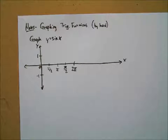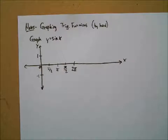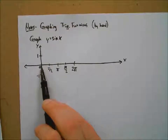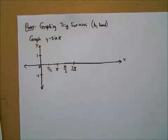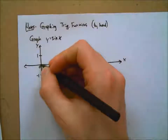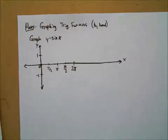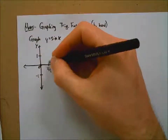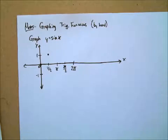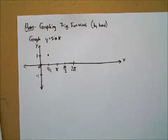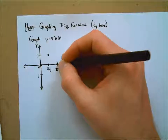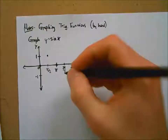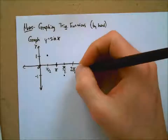What we're going to do is very similar to what you did back in algebra — we're going to plug in some of these x values and see what sine gives us as a y value, then plot those points. So at zero, sine of zero is zero. At pi over two, sine of pi over two is one. Sine of pi is zero. Sine of three pi over two is negative one. And sine of two pi is zero.